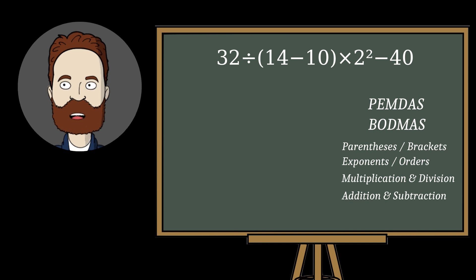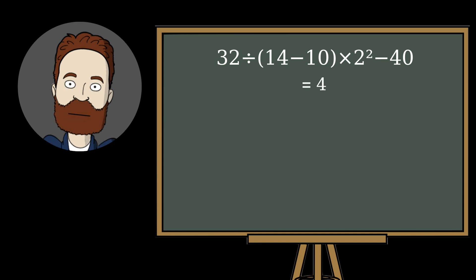All right, let's start over. We calculate what's in parentheses, that's 4. We raise to the power, 2 squared equals 4. We substitute the results.